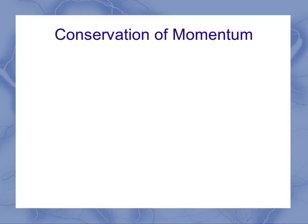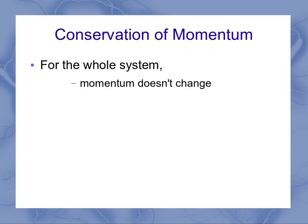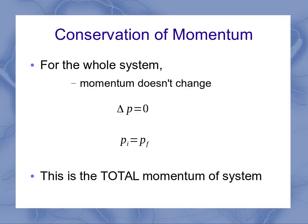This leads us to the concept of conservation of momentum. For the whole system, momentum doesn't change. As an equation, that means the change in momentum is zero, which can also be written as the initial momentum equals the final momentum. This is the total momentum of the system — the initial momentum is the sum of the initial momenta of all objects in the system, and the final momentum is the sum of the final momenta of all objects. That total momentum does not change before and after the interaction.